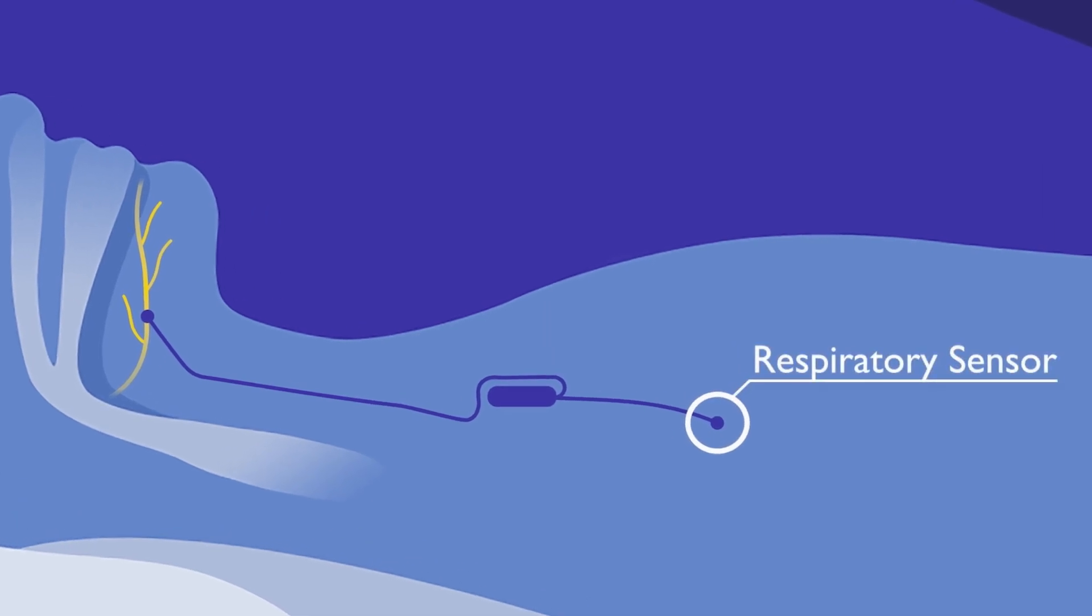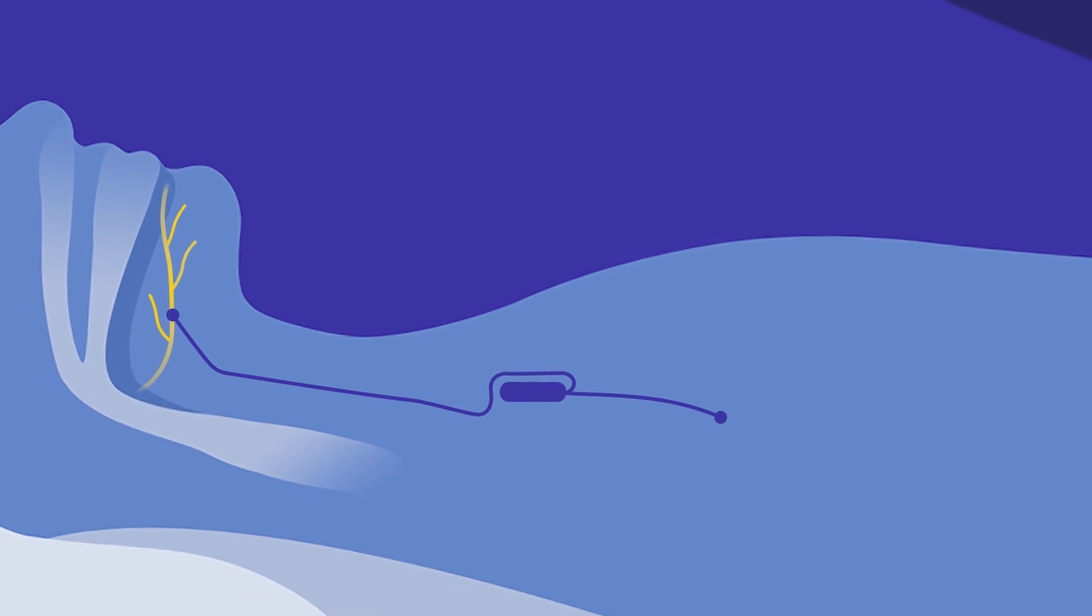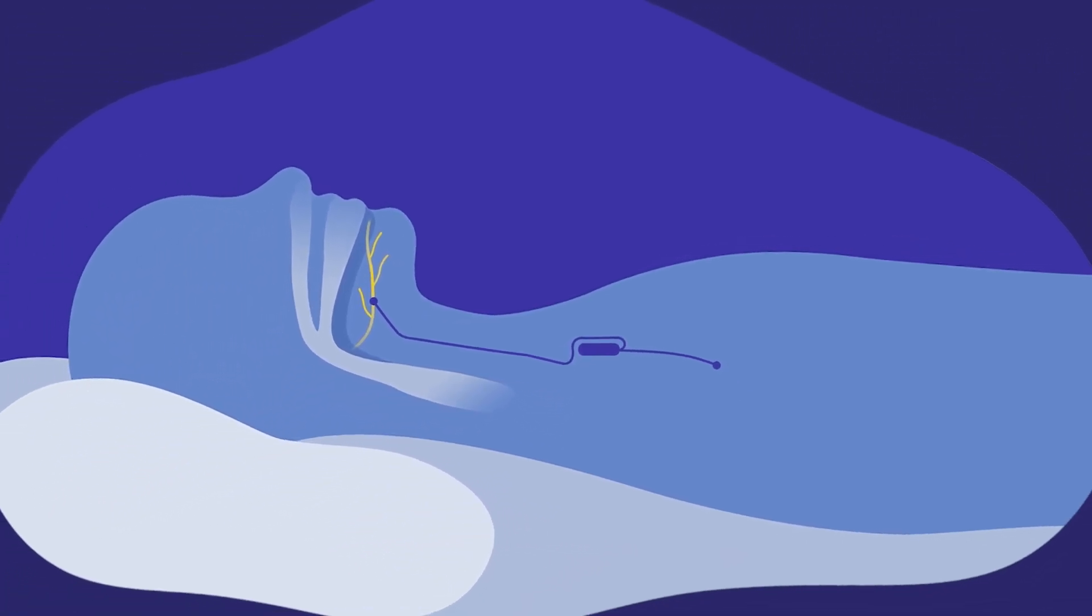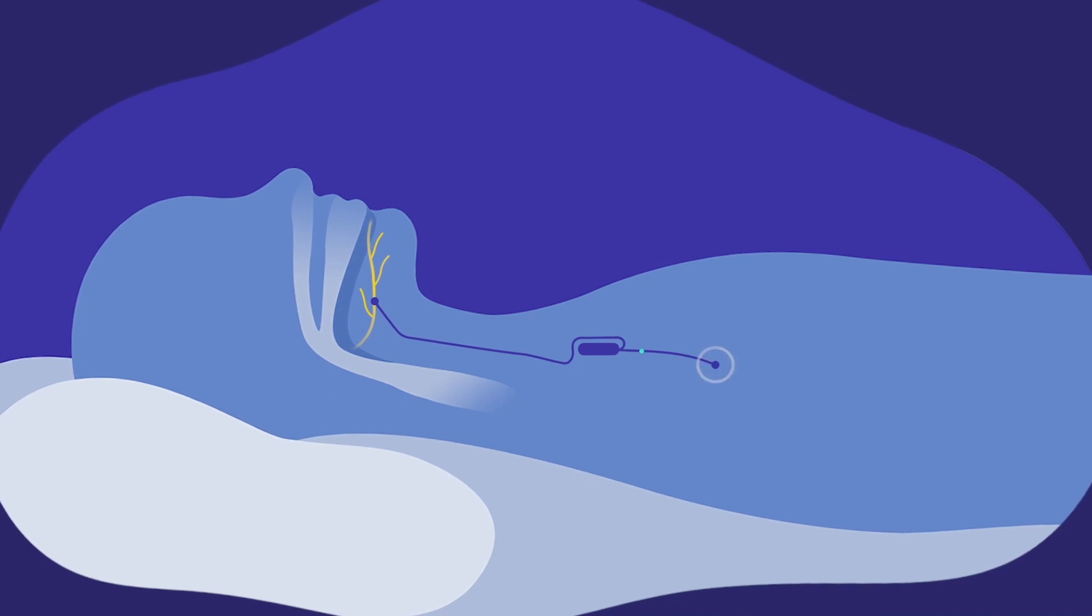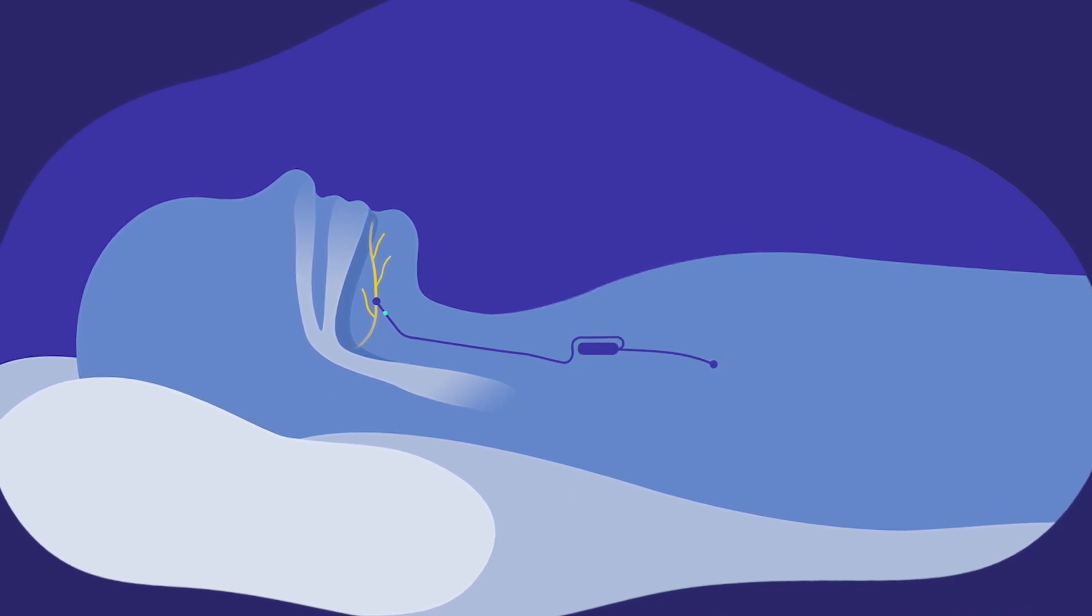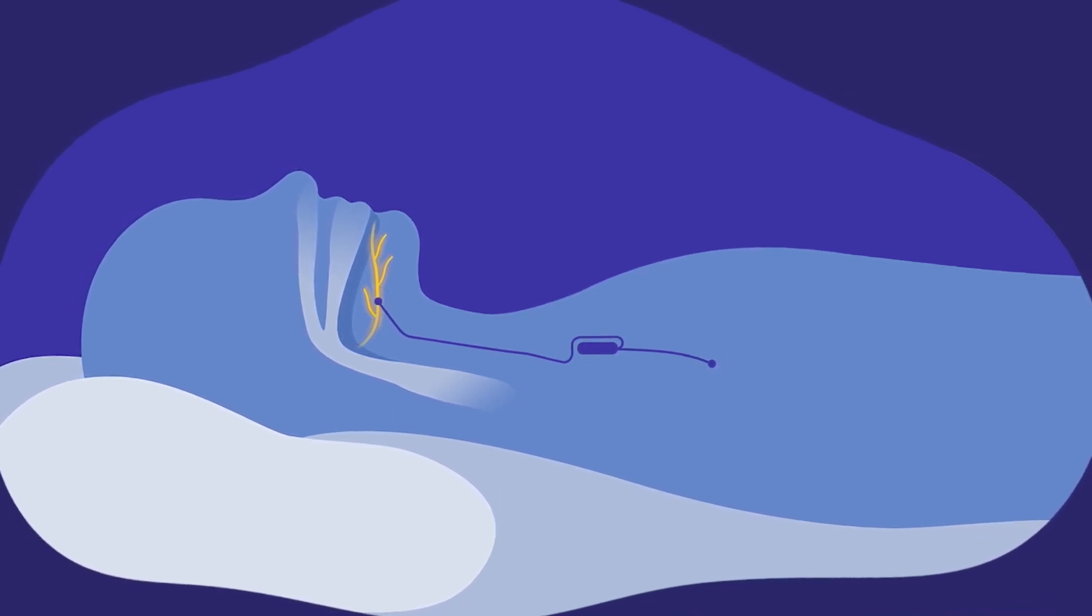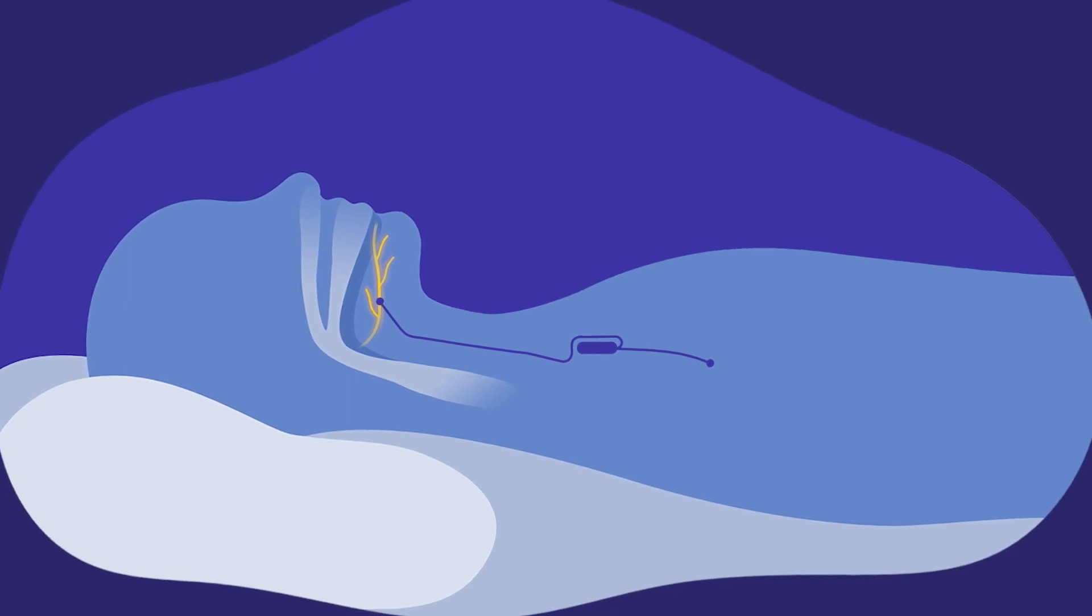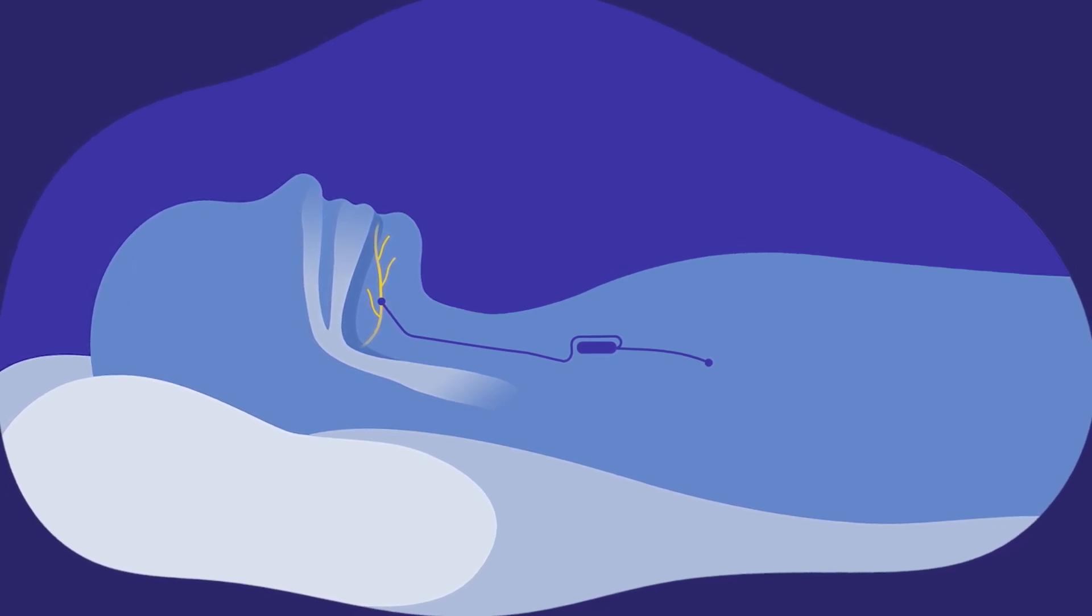Collectively, what happens when a patient turns this device on at night: they go to sleep, it kicks on, and then it senses the patient trying to breathe in. It stimulates the tongue to move forward in the mouth, thus preventing apnea or obstruction and basically keeps the airway open the entire night.